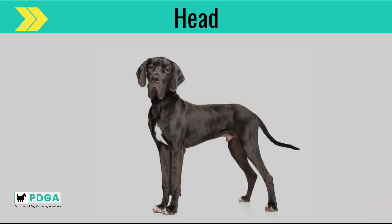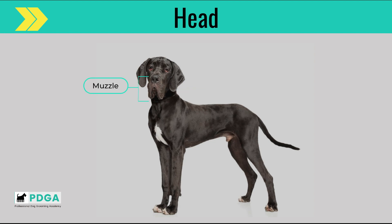Have a look at the image in front of you as we start from the head and work our way down to the rear. The flue is the lip, whiskers, muzzle — or also known as the foreface — which consists of an upper and lower jaw, and nose. The stop is an indentation between the eyes, between the muzzle and forehead. Some dogs have a more prominent stop than others.